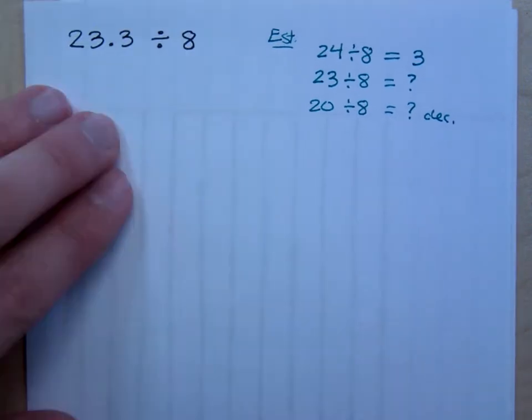But 24 is not that far off from that 23, and so my answer is about 3. Let's see if we get that. So I'm going to slide my guiding piece of paper under here. Make sure you always set up the division correctly. You're trying to divide 8 into the number 23.3.